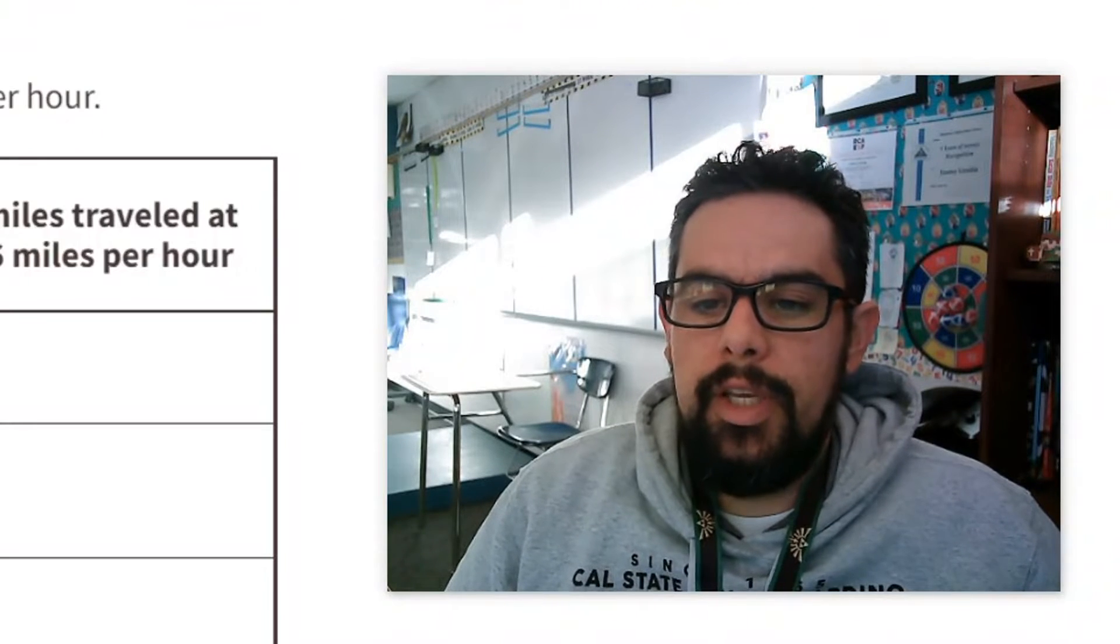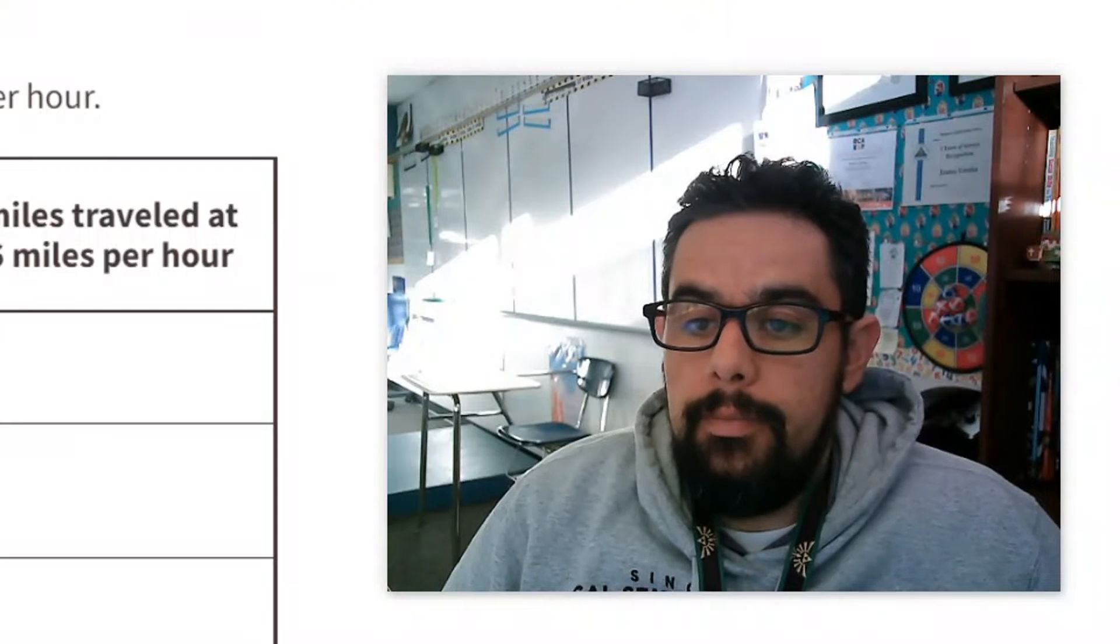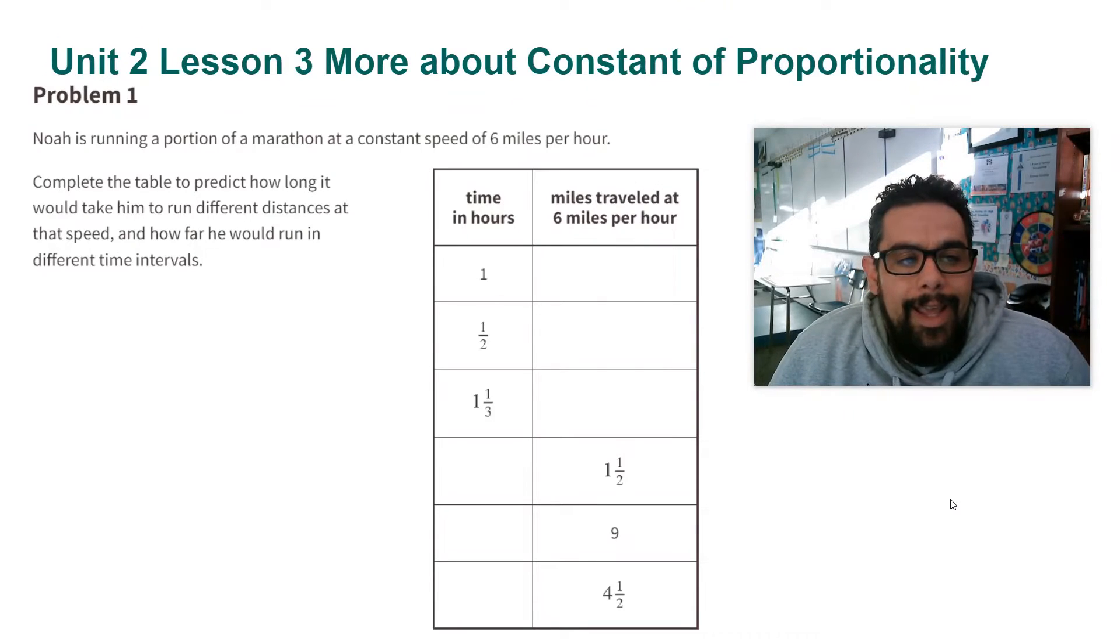All right ladies and gentlemen, Mr. Urutia here. We're going to go over Unit 1 Lesson 3 practice problem number one. Noah is running a portion of a marathon at a constant speed of 6 miles per hour. Complete the